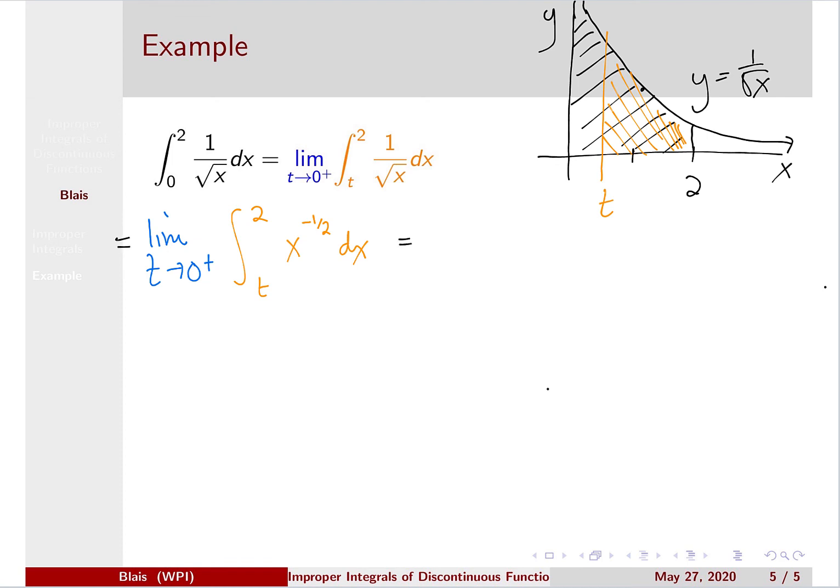And we know our anti-derivative for x to the negative 1 half. That would be x to the 1 half over 1 half, and we evaluate between t and 2. So this becomes the limit as t goes to 0 from the right. Simplifying that integrand, we have 2√x evaluated between t and 2.